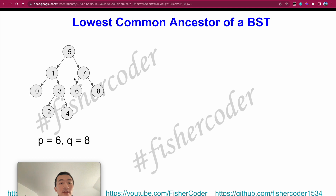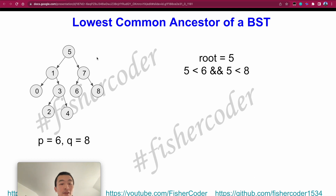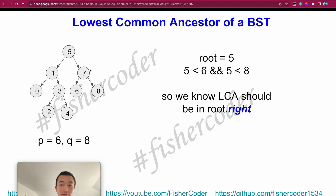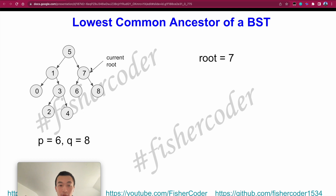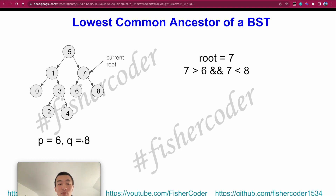Now let's see how traversal works going to the right side. p is 6 and q is 8. We start at root node 5. Since 5 is smaller than 6 and 5 is smaller than 8, the LCA must exist on the right side of the current root. We recurse to root dot right, which moves our root to 7. Now comparing 7 to 6 and 8 — 7 is greater than 6 but smaller than 8, so we've found the LCA.